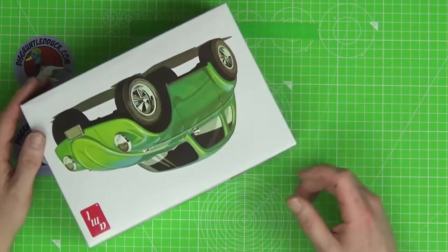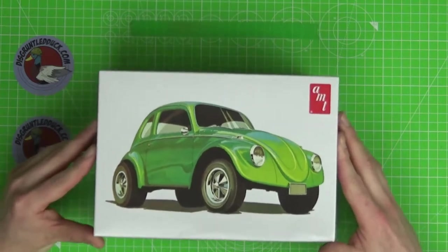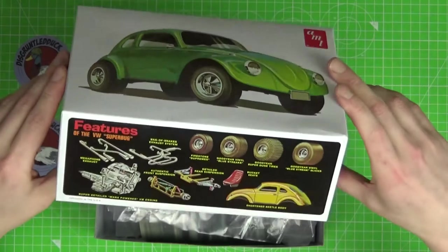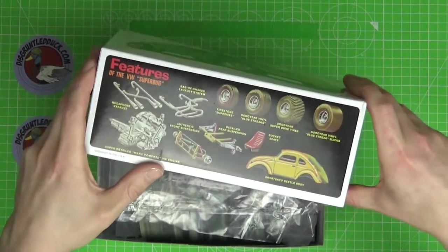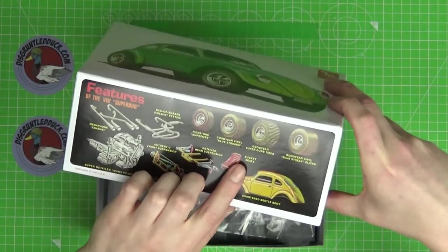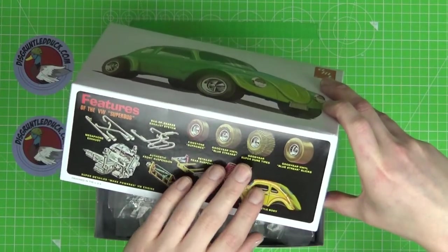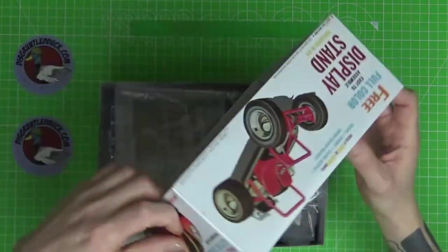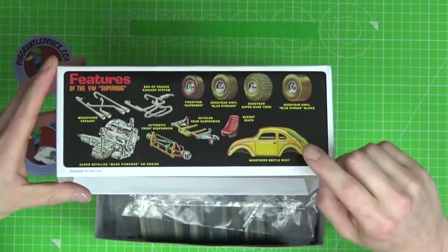It wasn't easy to find, I managed to get one from the States but let's have a look inside the box. Quite excited by this. There's some of the details - bag of snake exhaust, megaphone exhaust, super detailed Manx powered VW engine, authentic front suspension, detailed rear suspension, bucket seats, Goodyear vinyls, Firestone rims, Goodyear super dune tires, Goodyear slicks.